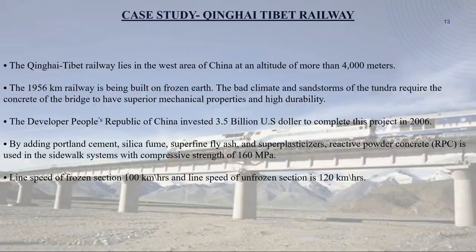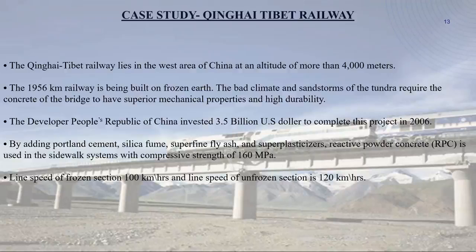Now I will discuss about the case study on the Qinghai-Tibet Railway. The Qinghai-Tibet Railway lies in West China at an altitude of more than 4000 meters. The 1956-kilometer railway is being built on frozen earth. The harsh climatic conditions and sand storms of the tundra require the concrete of the bridge to have superior mechanical properties and high durability. The People's Republic of China invested 3.5 billion US dollars to complete this project in 2006. By adding Portland cement, silica fume, superfine fly ash, super plasticizer, and reactive powder concrete in the sidewalk system, compressive strength of 160 MPa was achieved.